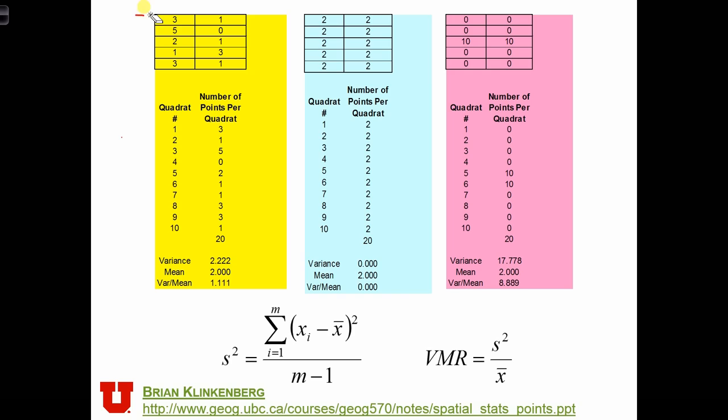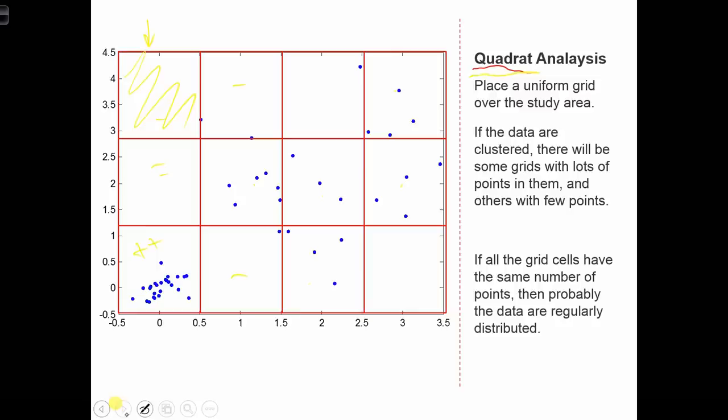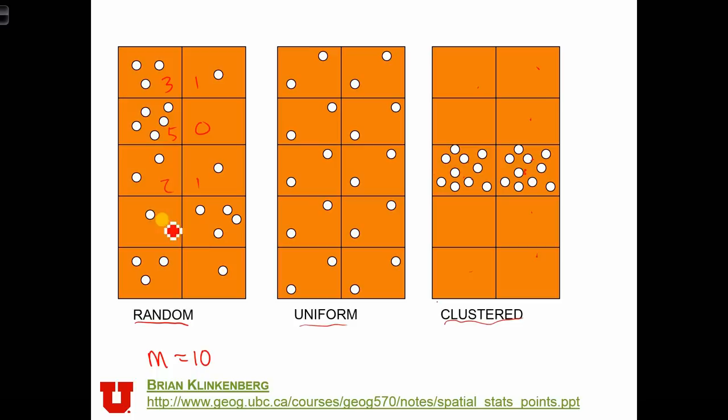So if you don't believe me, let's go back to, say, this case. So we had 3, 1, 5, 0, 2, 1, 1, 4, 3, and 1.